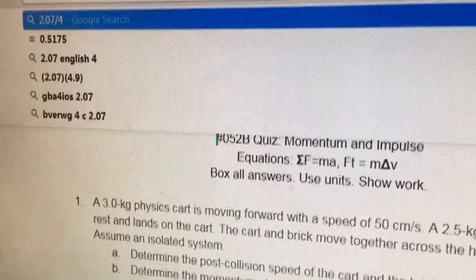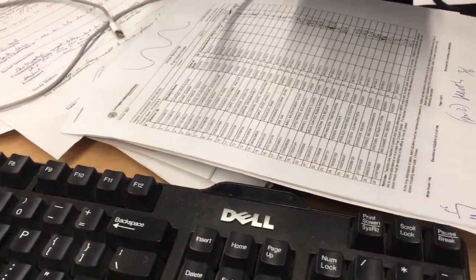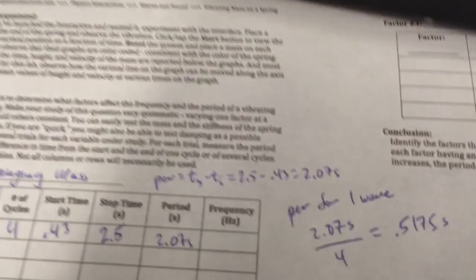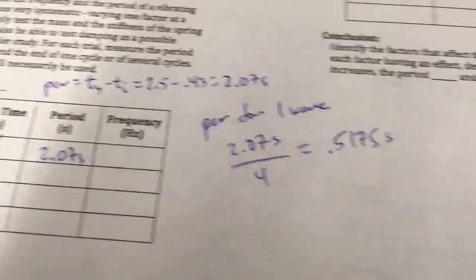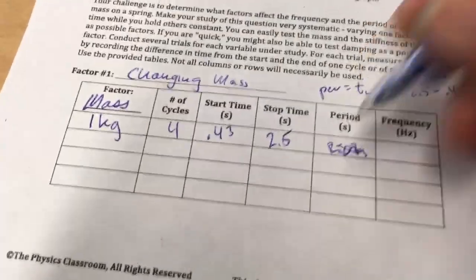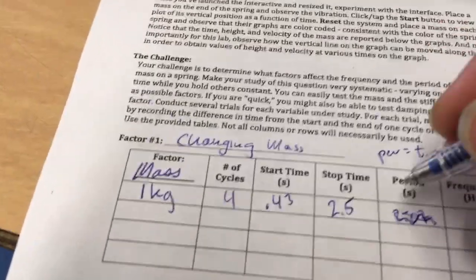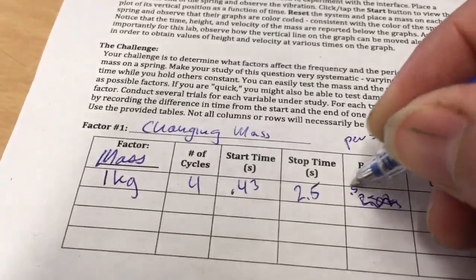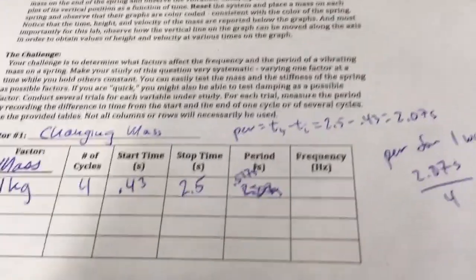2.07 seconds, and that's 0.5175 seconds. There we go. So there's the period for 1 wave.